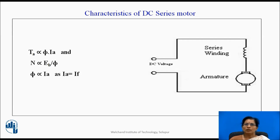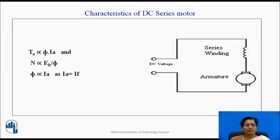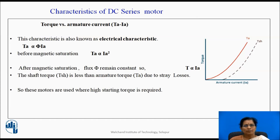Now let us discuss the characteristics of the DC series motor. The armature is connected in series with the series winding, and the total voltage is connected across the series combination. The armature torque is directly proportional to flux and armature current, and speed is directly proportional to back EMF and inversely proportional to flux. Here, the current through the armature is the same as through the series winding, so flux is directly proportional to armature current — that is, Ia equals If. These characteristics are also known as electrical characteristics.